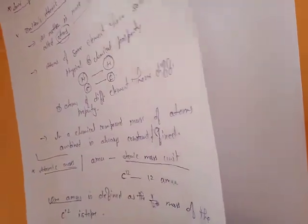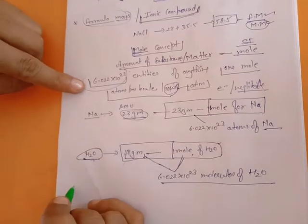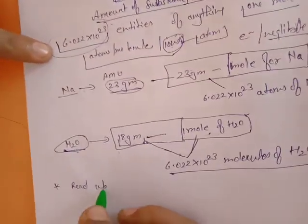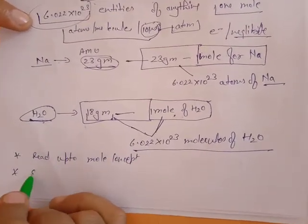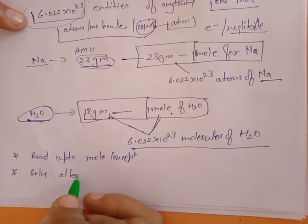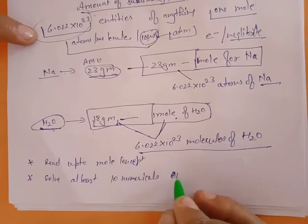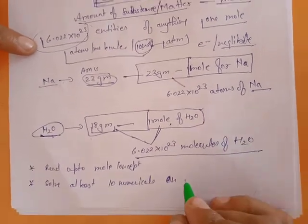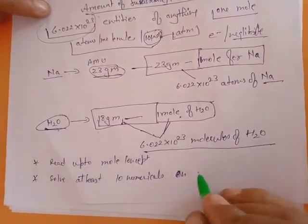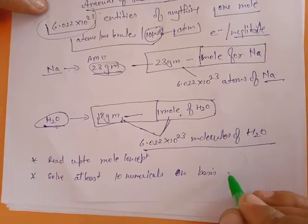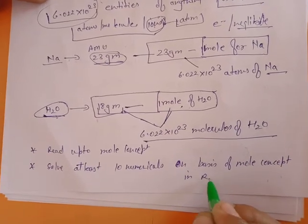So today we discussed Dalton's atomic theory and different terminology including atomic mass, molecular mass, formula mass, and the mole concept. Your homework is to read up to the mole concept and solve at least 10 numericals on mole concept in your rough notebook, as further topics are all based on the mole concept. Thank you.